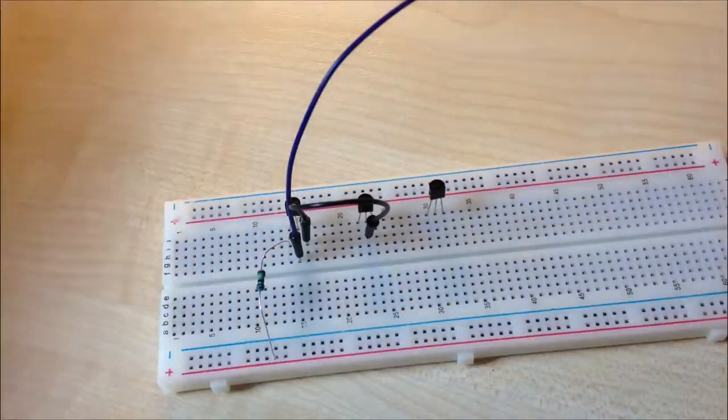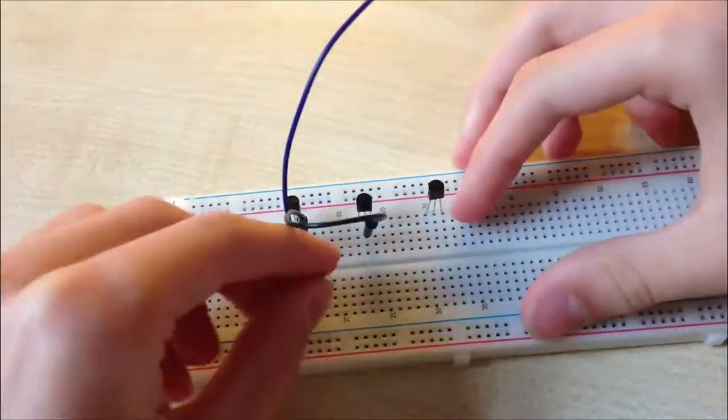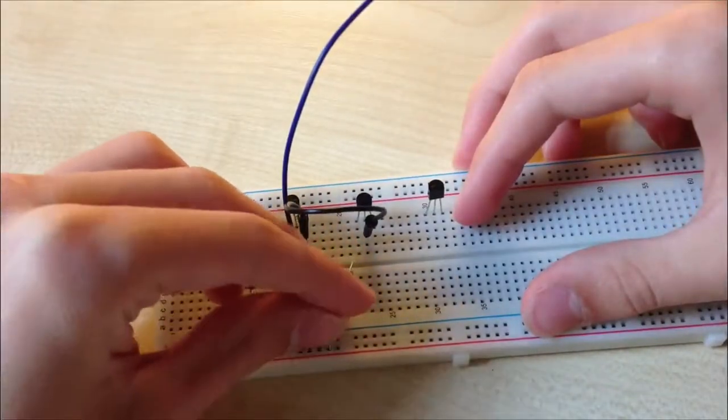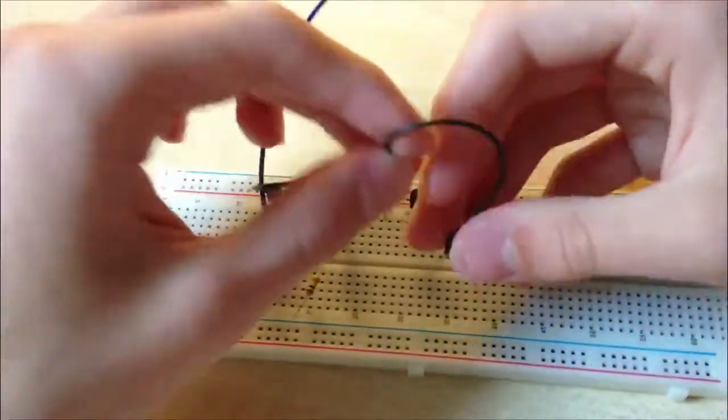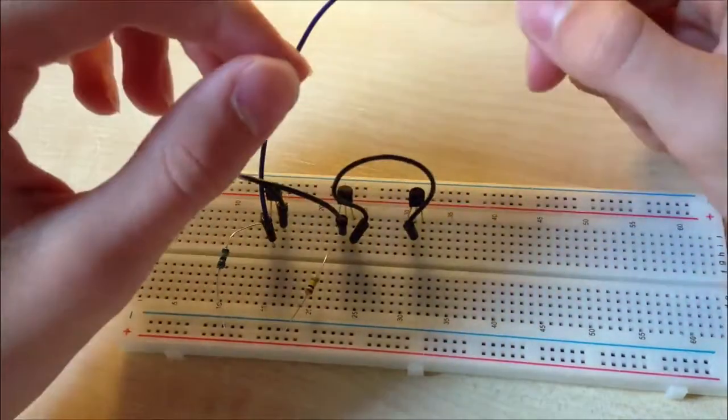Connect 1000 ohm resistor between positive rail and second transistor's collector. And connect the emitter to the base of the third transistor.